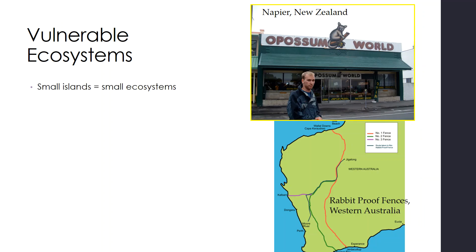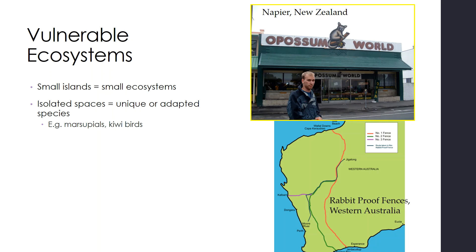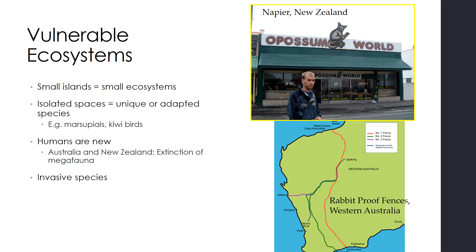There are lots of vulnerable ecosystems in the region. Small islands equal small ecosystems, and small ecosystems have really evolved to have a unique ecological balance, so they are very susceptible to invasive species. We have these isolated spaces and unique or adapted species such as marsupials or kiwi birds — things found only in these areas. Humans are relatively new to these land masses. Australia and New Zealand saw the extinction of large megafauna, leaving mostly smaller animals. There are lots of problems with invasive species like feral pigs, rabbits, rats, and possums that were brought there mostly by Europeans.